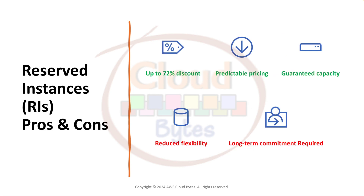Let's look at reserved instances, or RIs. With reserved instances, you agree to a commitment of one or three years of usage. You can pay in three ways: all upfront, partial upfront, or no upfront. All upfront gives you the best discount, up to 72%. Partial upfront gives a lesser discount, and no upfront gives the lowest discount — but still discounted compared to on-demand. You can also go with convertible RIs, which allow flexibility to change your instance type as long as the value is equal to or higher than the original.